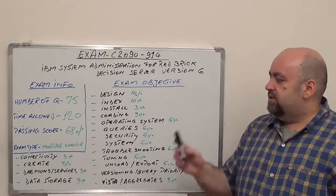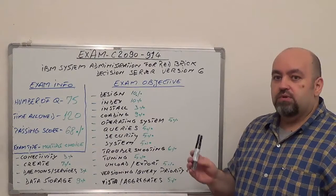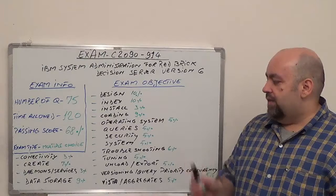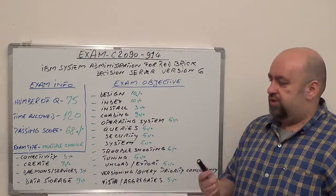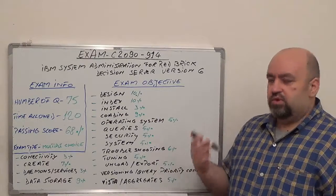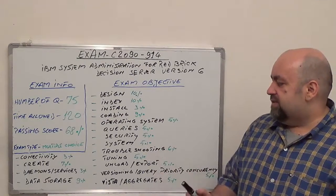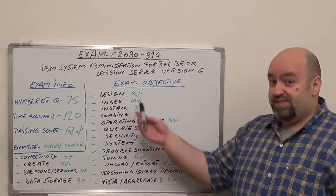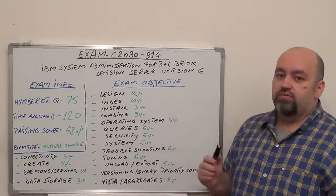The first one is connectivity, with 3% from total questions. Next one, create, 7% from total questions. After that, we have daemon services, 3% from total questions. Following data storage, 9%. After that, we have design, with 10% from total questions.